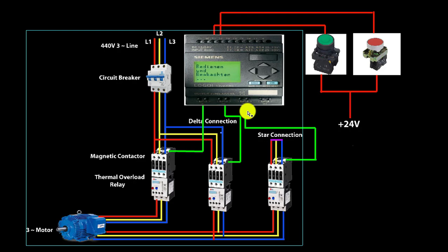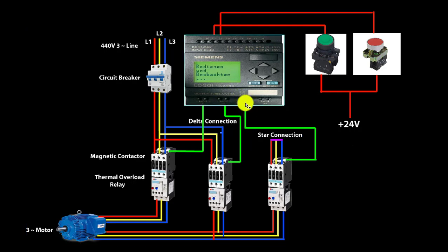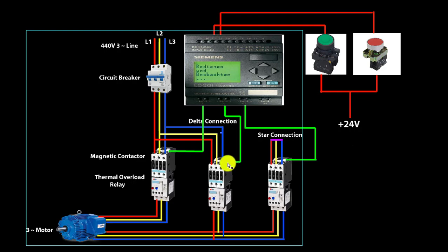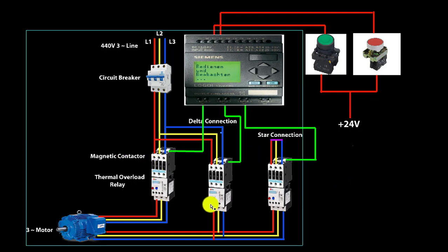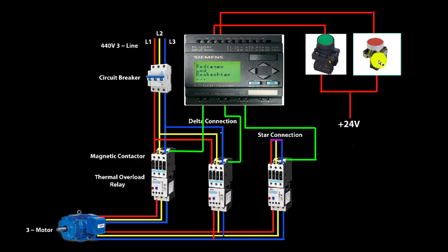With Q1 on, if we start the connection, then automatically Q3 and Q2 will start. Then we start the connection with delta. We start the connection shown with the red color in the diagram.